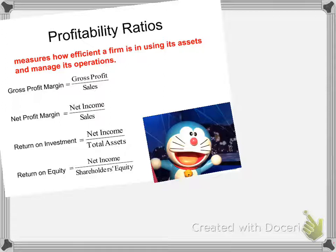So you have four ratios here. Basically, we have: first, gross profit; second, net profit; third, net income or net profit; and number four here. So one, two, three, four.